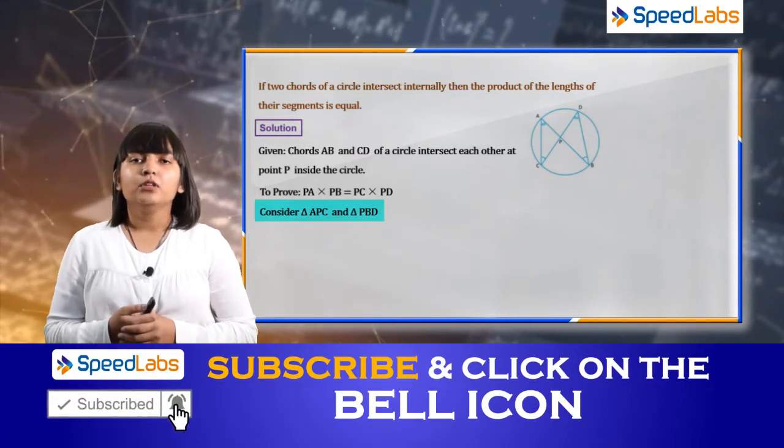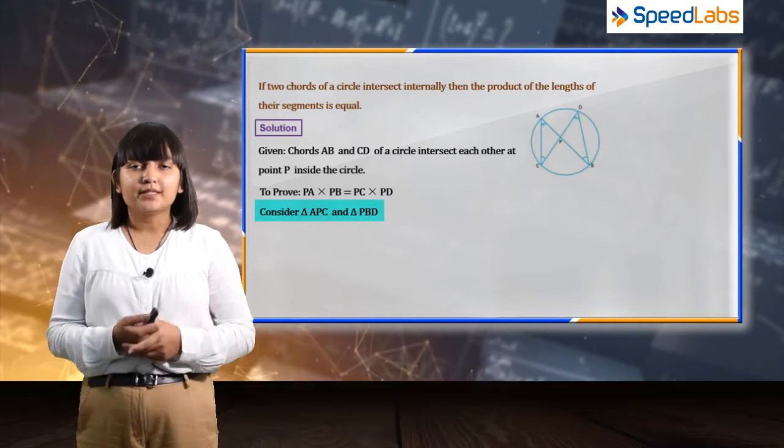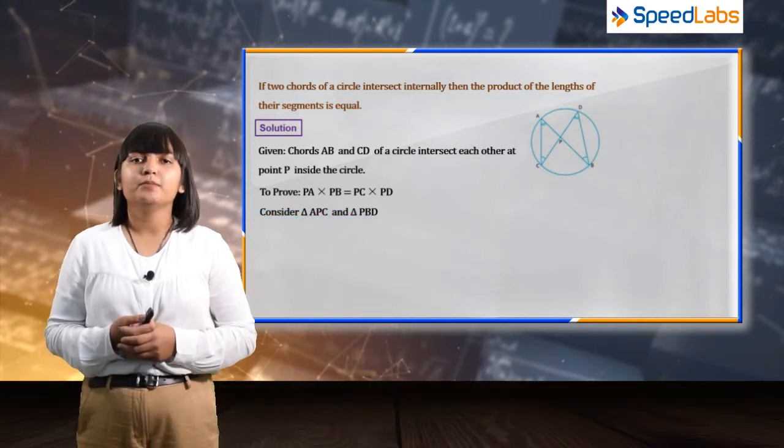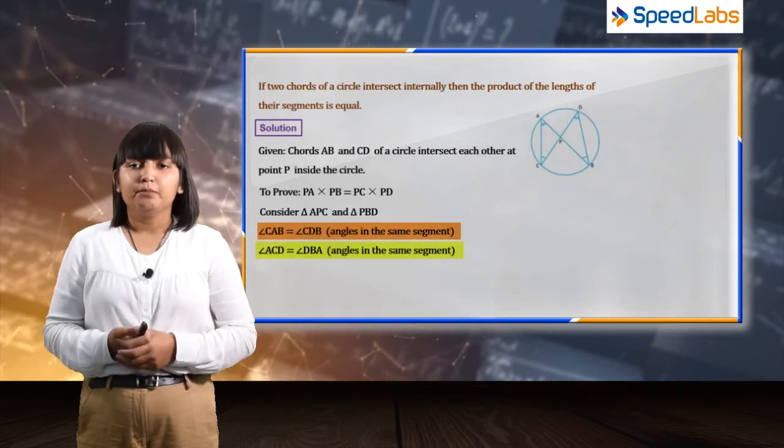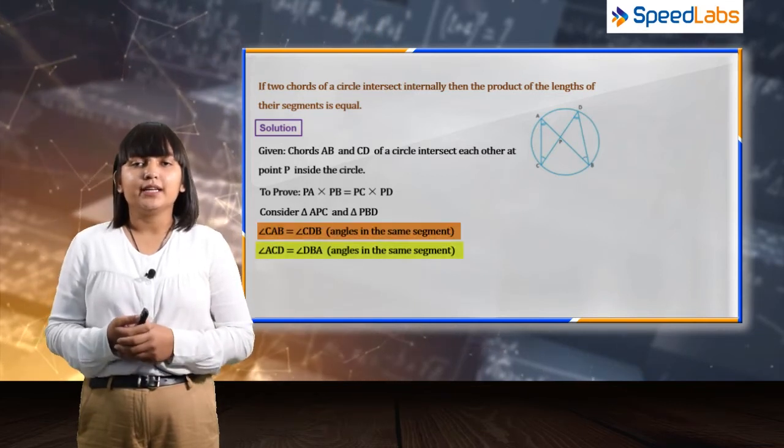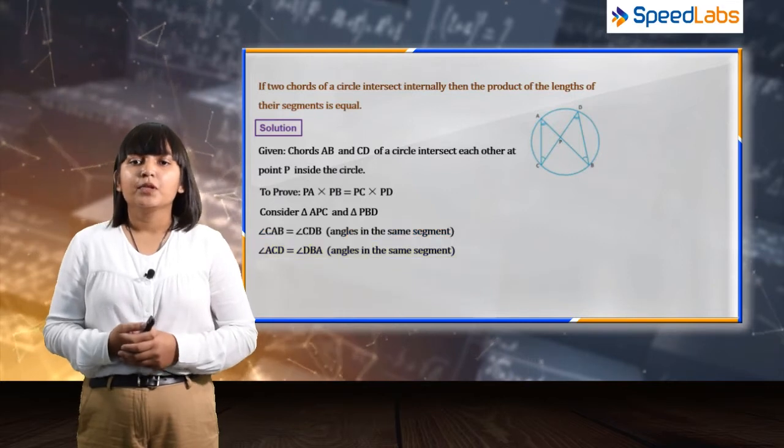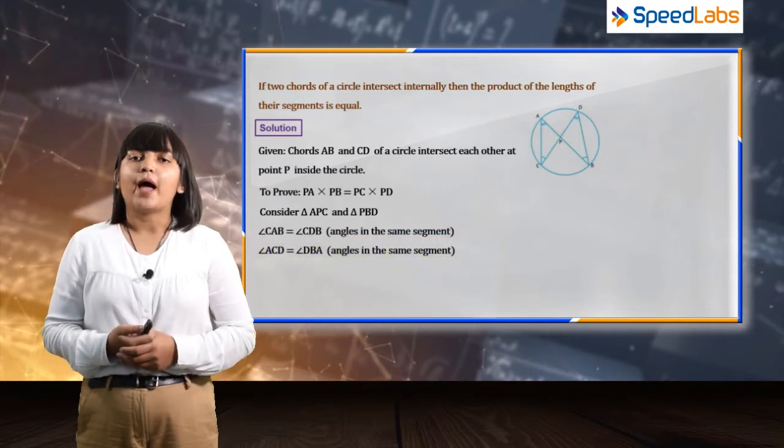We need to prove the two given triangles inside the circle are similar. In order to prove them similar, we can say that angle CAB is equal to angle CDB and angle ACD is equal to angle ABD.